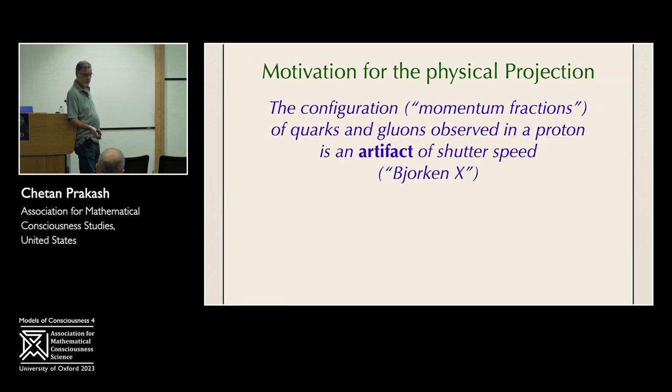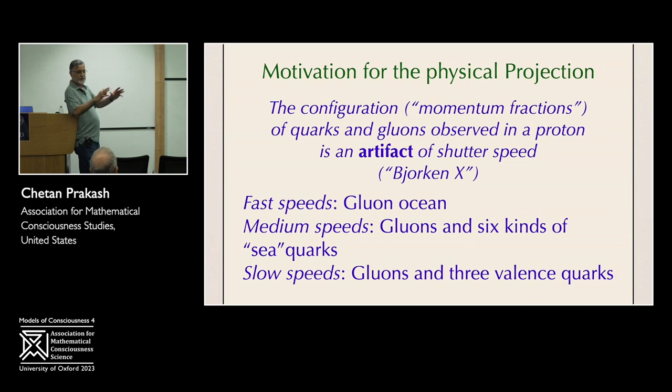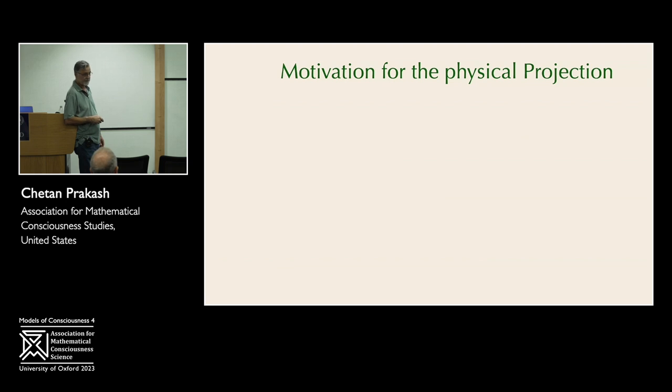Here's a motivation for that. Now I'm going to tell you what we know from experimental physics. So the configuration of quarks and gluons observed inside a proton is really an artifact of how you look at it. So shutter speed, for example, is something that when it's very fast, all you see is a gluon ocean. You just see an ocean of massless particles in a proton that has mass. So this is something very interesting. At medium speeds, six kinds of new quarks appear. And at slow speeds, when you're looking at it, you're taking your time to look at it, the proton looks more like what, in popular imagination, a proton looks like. Namely, it's got three valency quarks and there are gluons going between them. But this is an artifact, and that's my main point here.